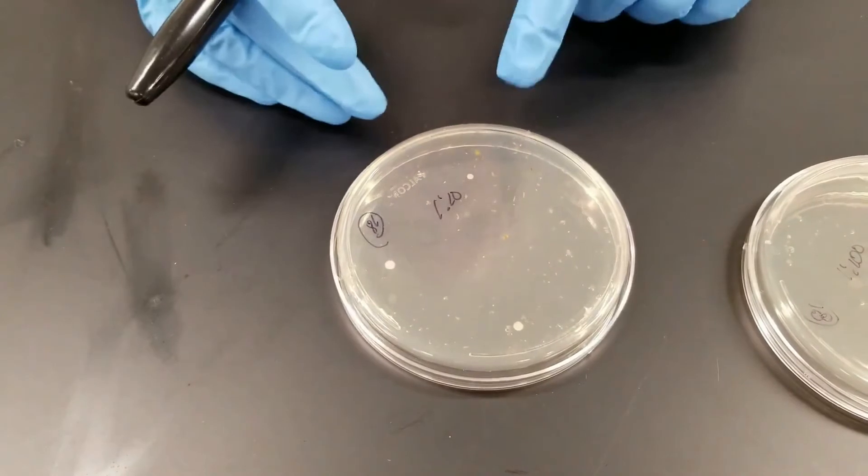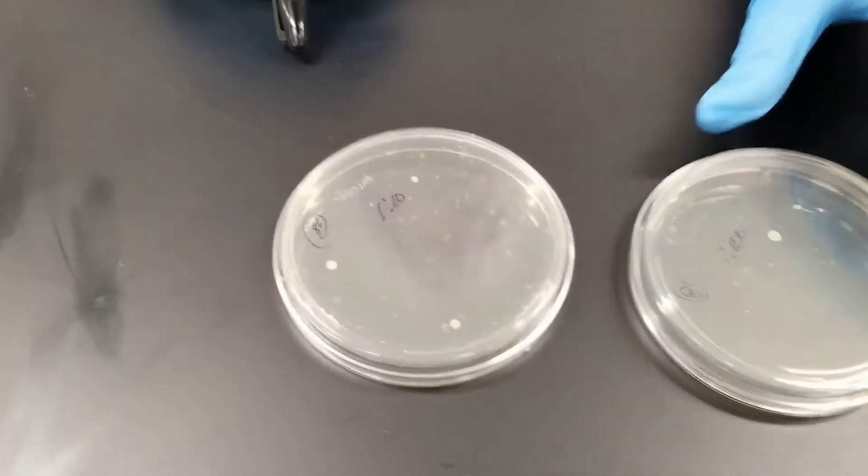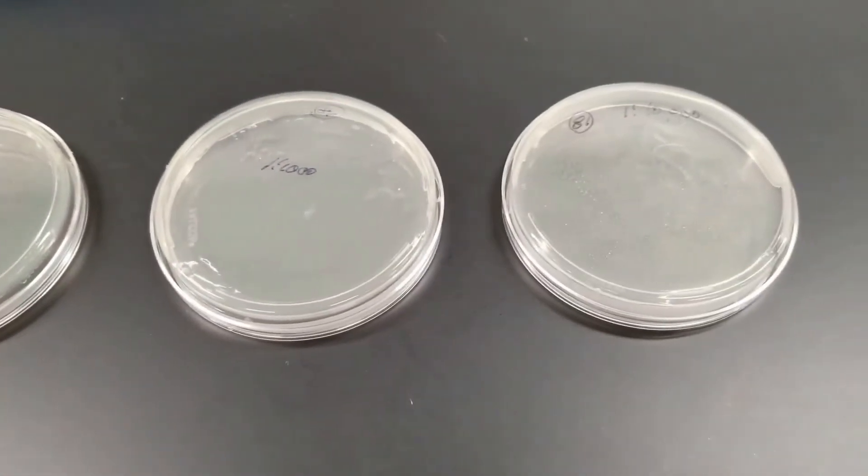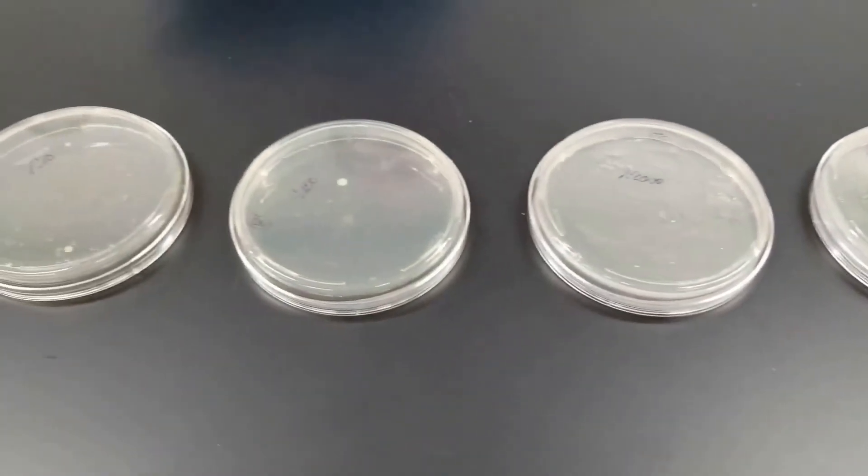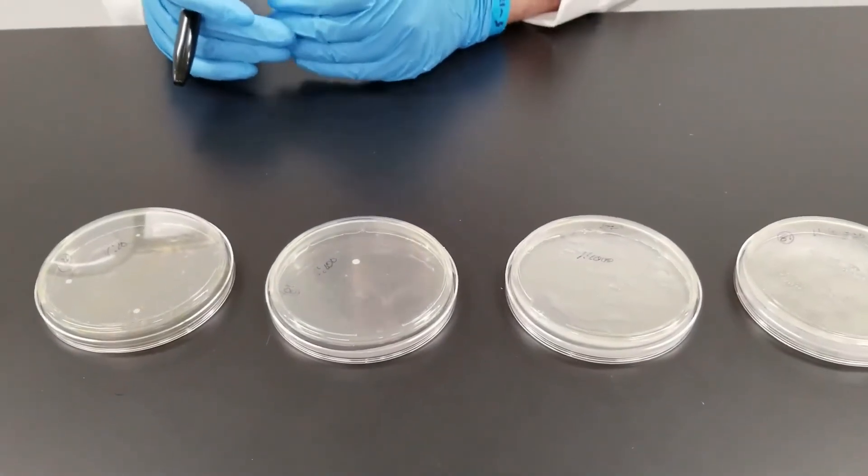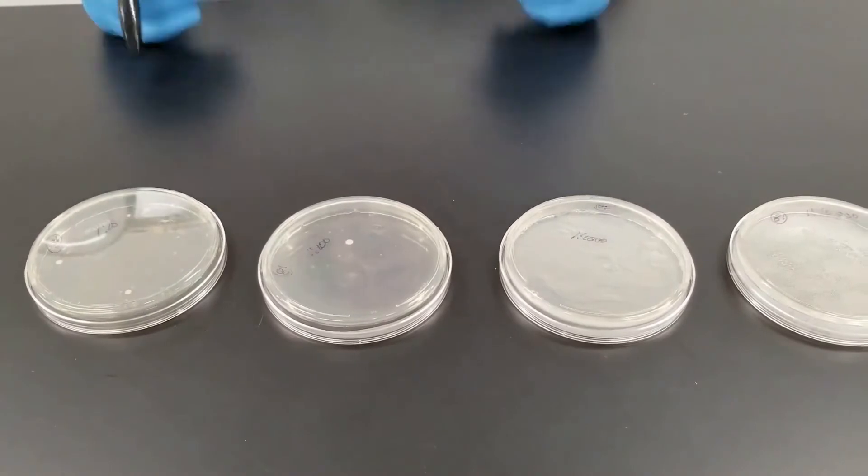The concentration on the plate is a 1 to 10 dilution. Then we have a 1 to 100, 1 to 1,000, and 1 to 10,000. Our idea for this, we're trying to determine, in this case we use the strawberry slushy, how many bacteria per gram or per milliliter of the slushy drink, the strawberries.